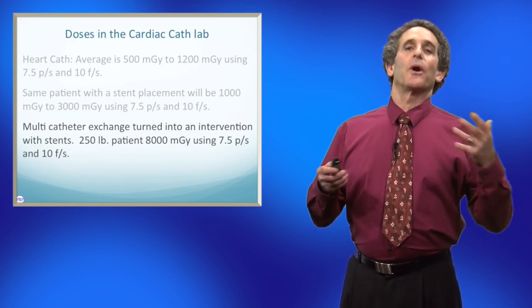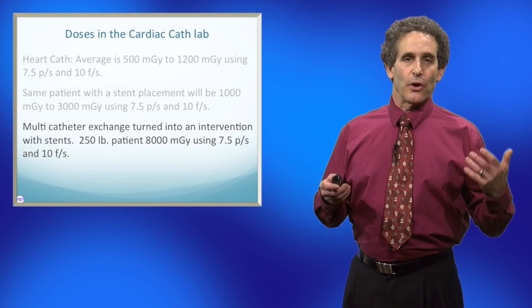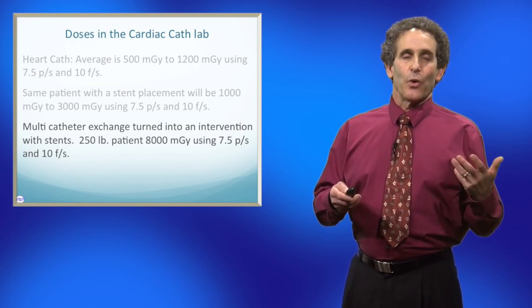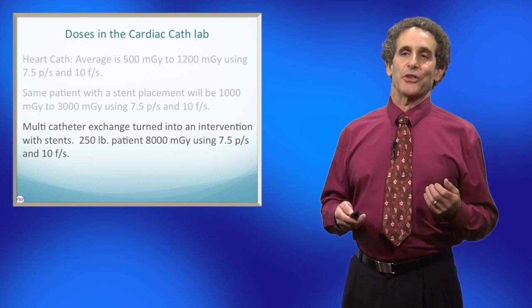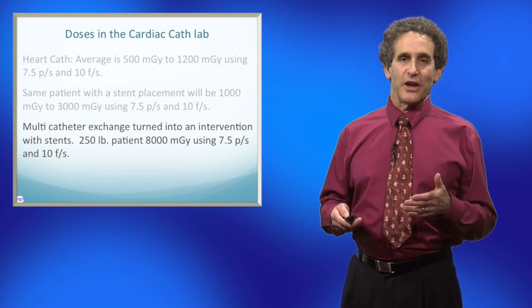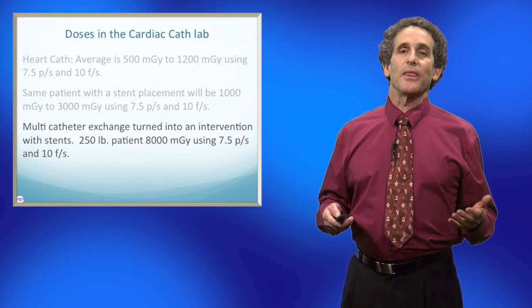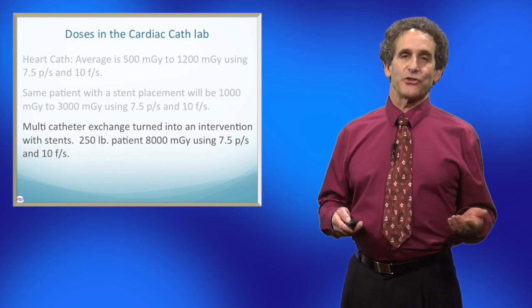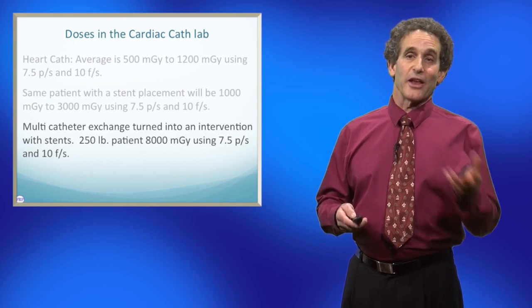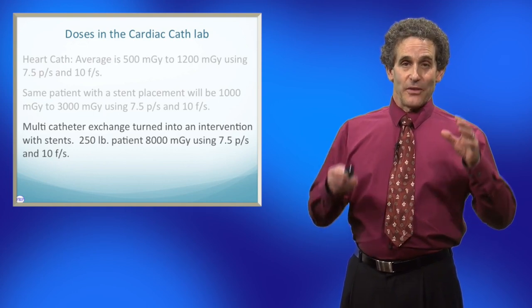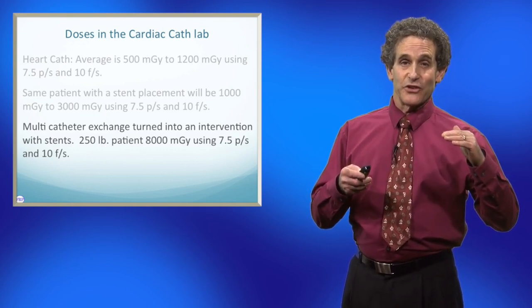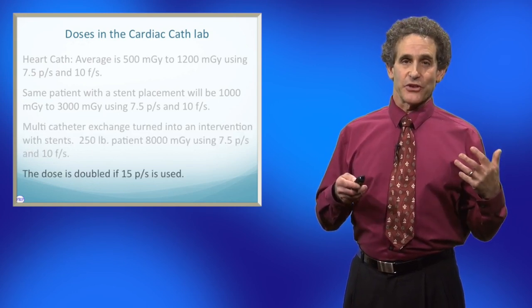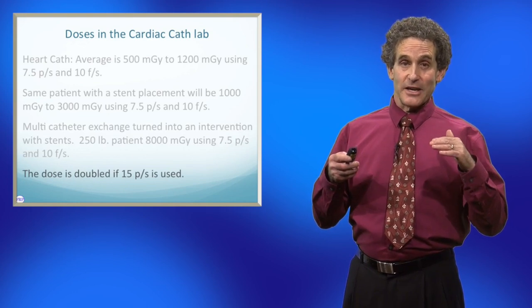She also gave us an example of a large patient with a longer exam — a multi-catheter exchange that turned into an intervention with stents on approximately a 250-pound patient. That dose at the end was 8,000 milligray using 7.5 pulses and 10 frames. Remember, that's Terry who always drops down to 7.5 whenever she can. But if you're working at a facility where they default to 15, you've doubled any one of those doses. That's why it's so important to drop it down whenever you can to 7.5, and to reduce your frames as well.